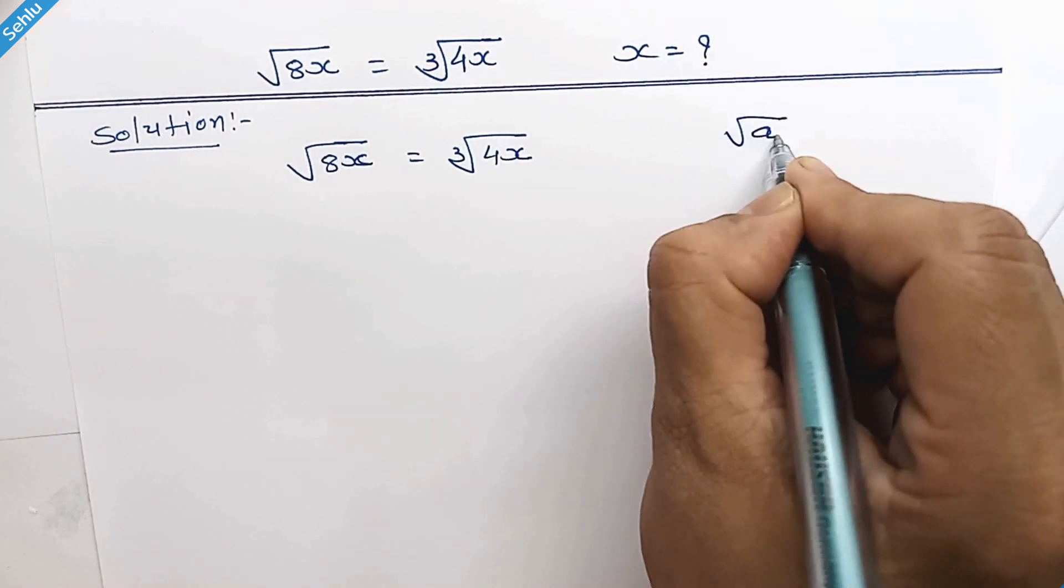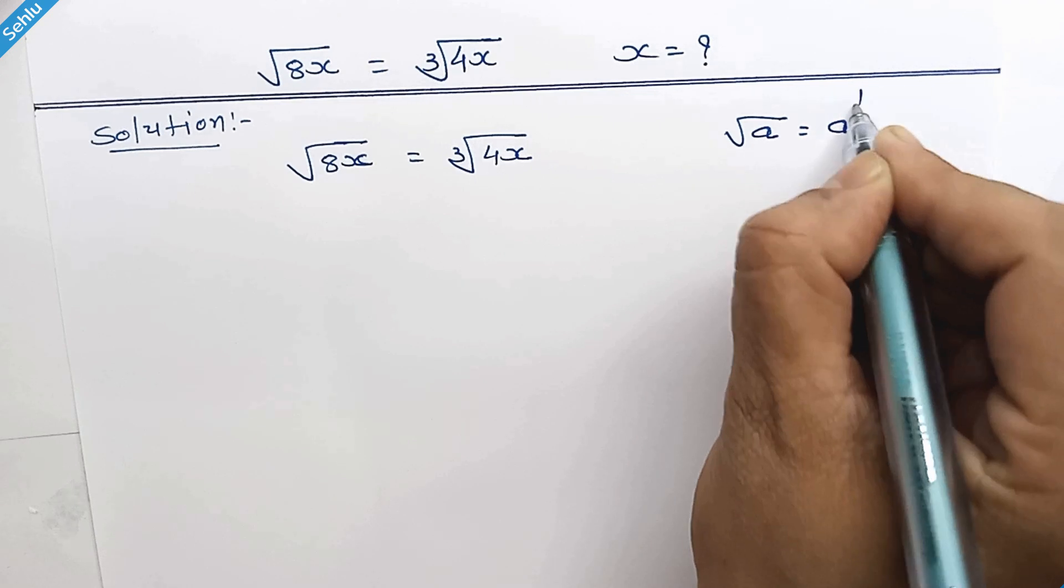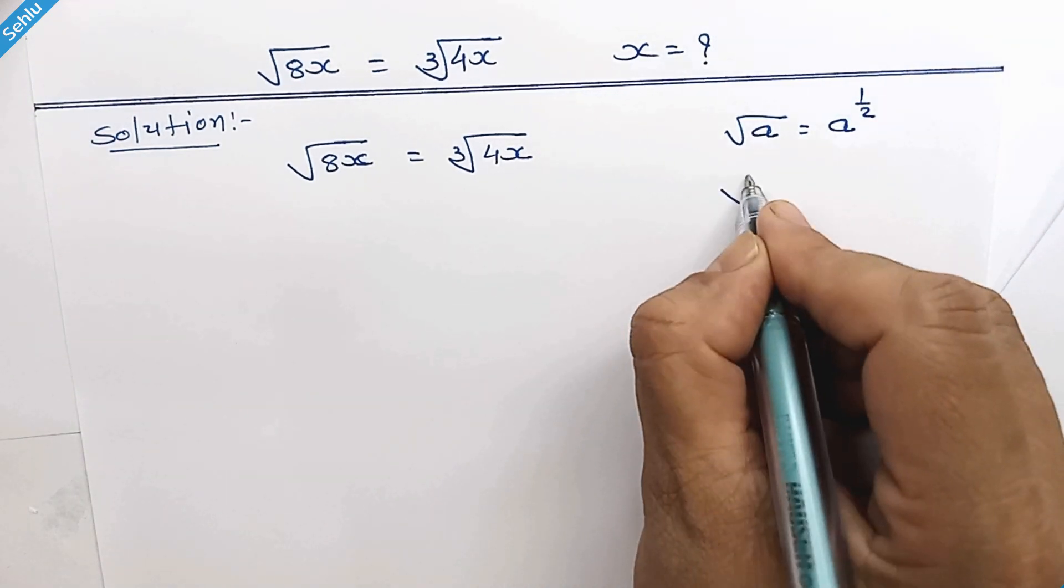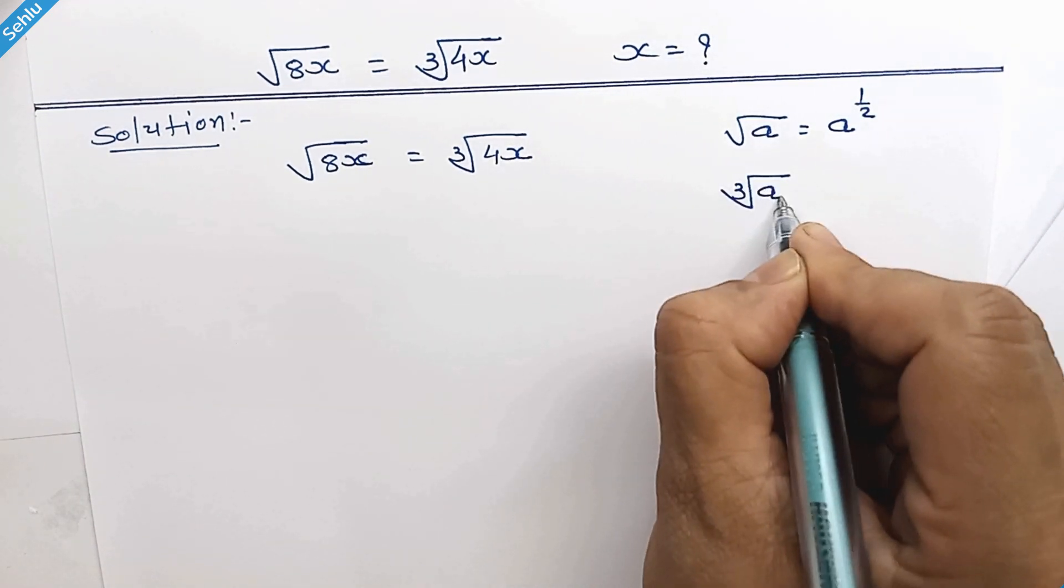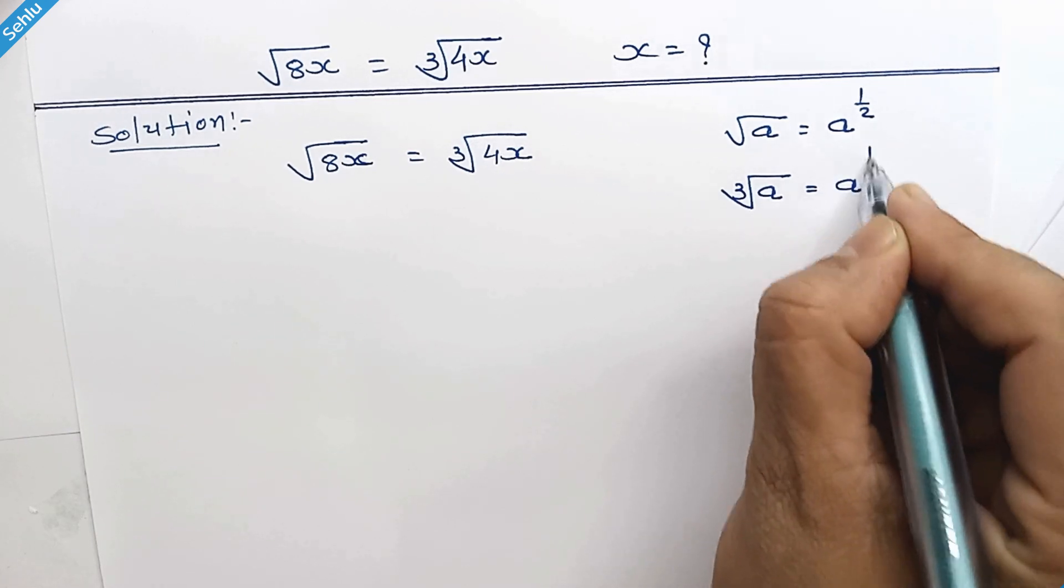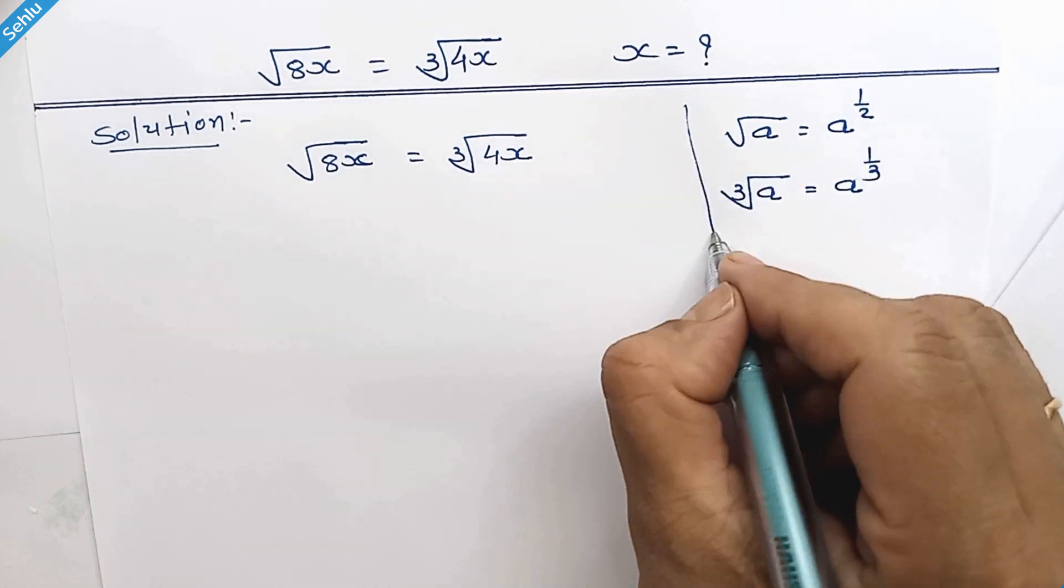When we have square root a, then it can be written as a to the power 1 over 2. And when we have cube root a, then it can be a to the power 1 over 3.